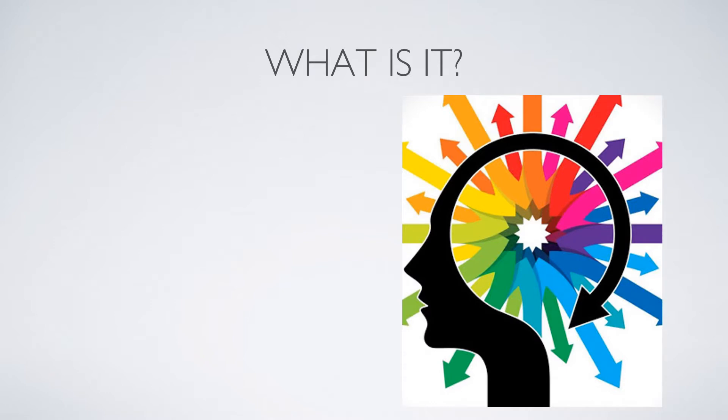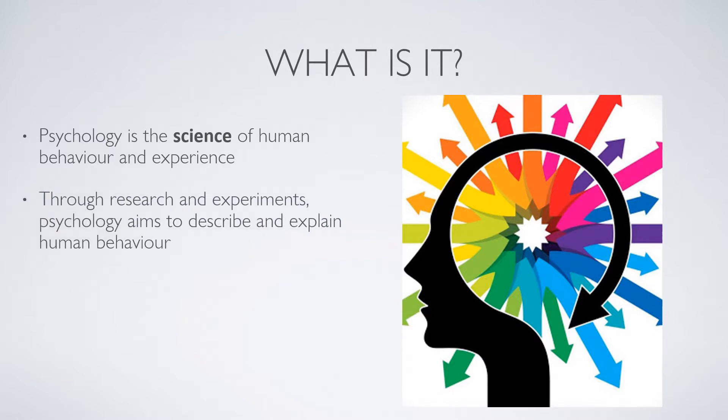We recognize that for most of you, you won't have studied psychology before, so we thought it might be useful to start with telling you what psychology actually is. It's a science of human behavior and human experience, so in effect it's the science of us. We use research, experiments and evidence to help us describe and explain human behavior. The idea is that if we can describe and explain human behavior, then we can predict the ways in which people are going to behave and therefore hopefully change people's behavior for the better to improve their everyday lives.